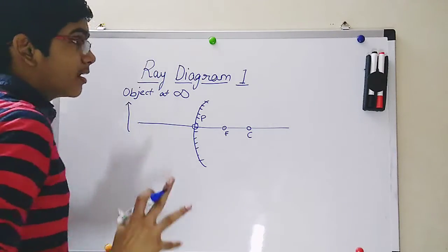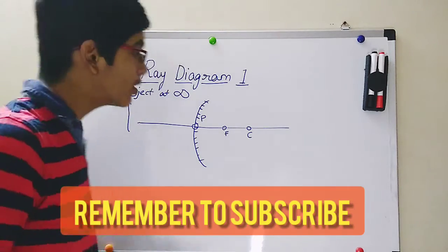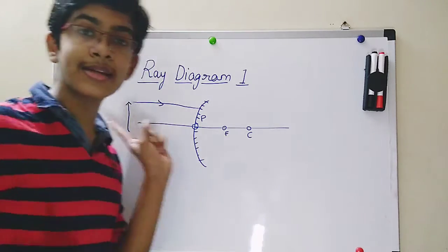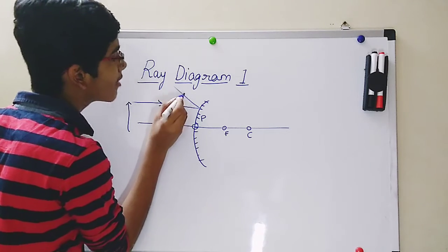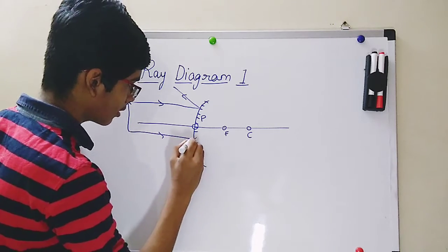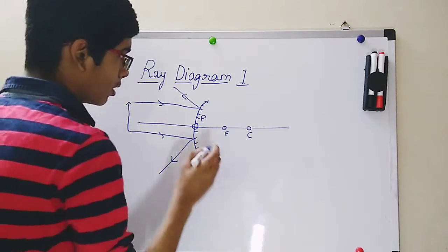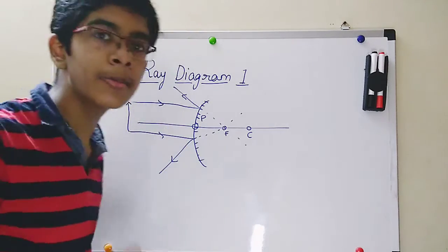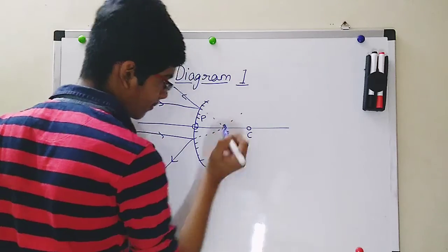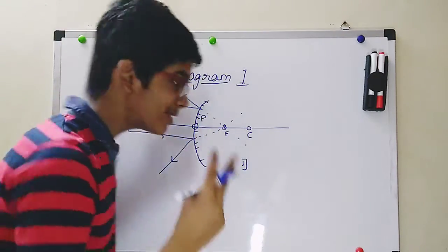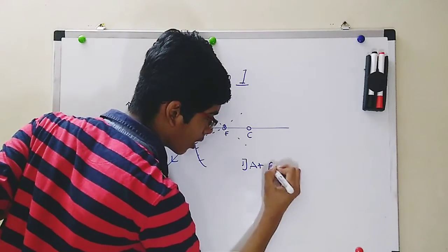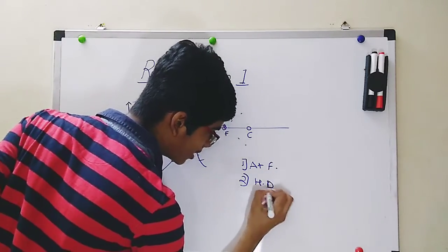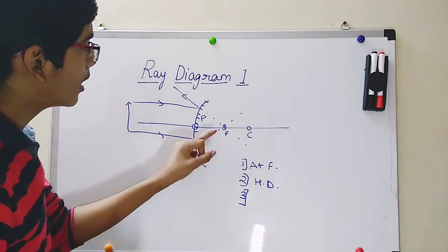If you don't want to assume the rays are parallel, I'll show you what happens in that case. First, assuming the light rays are parallel to the principal axis: they will get reflected outward — diverged — because this is a diverging mirror. If we extend the reflected rays backward, they meet at the focus. The image is formed at focus, which is behind the mirror. It is point-sized or highly diminished. It is virtual and erect.